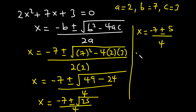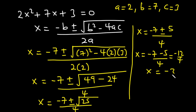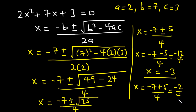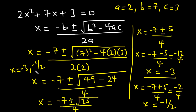Taking the minus sign: x = (−7 − 5) / 4 = −12/4 = −3. Taking the plus sign: x = (−7 + 5) / 4 = −2/4 = −1/2. So the roots are x = −3 and x = −1/2. This is how to find the roots of a quadratic equation using the general quadratic formula.